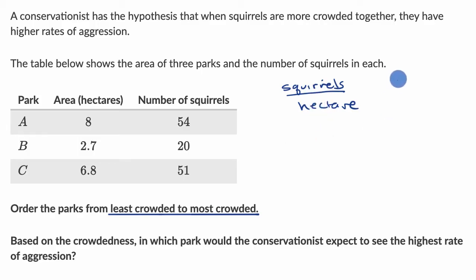You could also think about it in terms of hectares per squirrel. This would also be a legitimate way of tackling it. If you have more hectares per squirrel, that would be less crowded. If you had fewer hectares per squirrel, it would be more crowded.